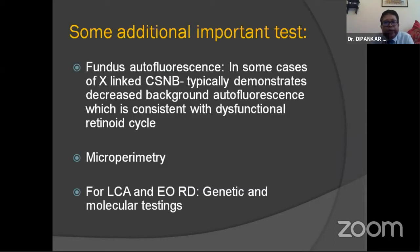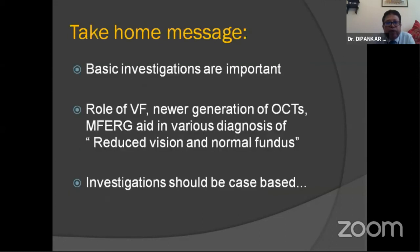Some additional important tests: fundus autofluorescence, which neuro-ophthalmologists may not routinely perform but retinal specialists do. In X-linked congenital stationary night blindness, cases typically demonstrate decreased background autofluorescence, consistent with a dysfunctional retinal cycle. Microperimetry has been used in advanced centers to detect changes in multiple sclerosis — retinal mapping, particularly of the macula, is very helpful — but most centers in India do not have microperimetry. For LCA and early-onset retinal dystrophy, genetic and molecular testing is very, very important.